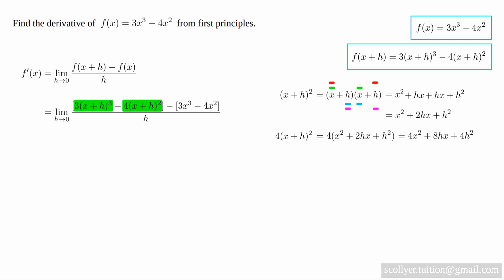Now we expand 3x plus h all cubed. First we expand x plus h all cubed as follows: x plus h all cubed equals x plus h times x plus h squared, which is x plus h times x squared plus 2hx plus h squared, using the expansion above.